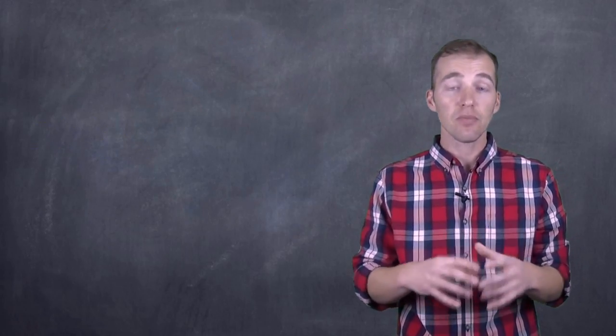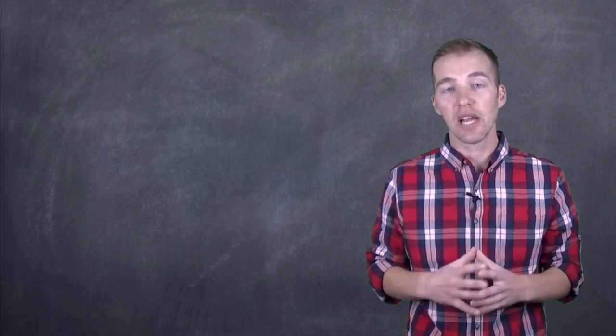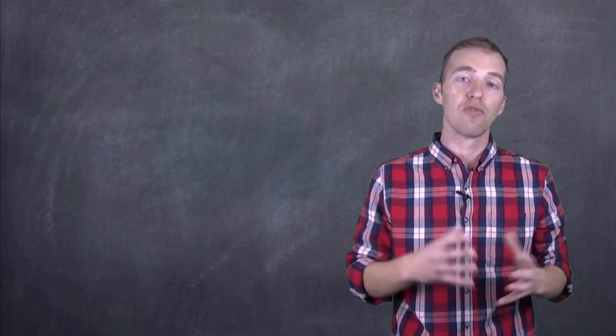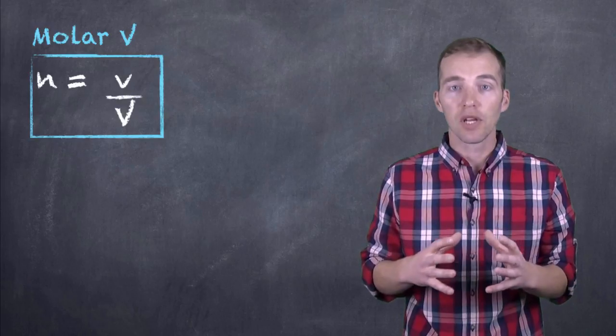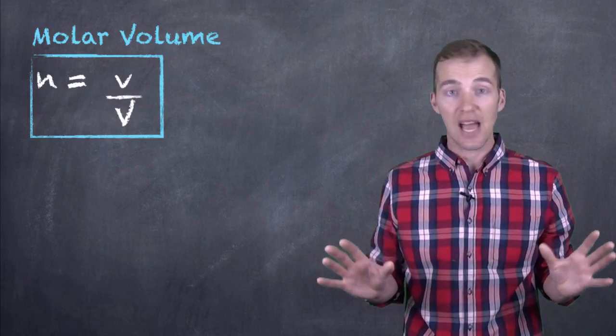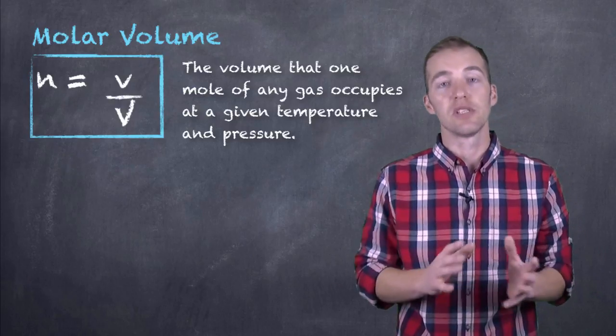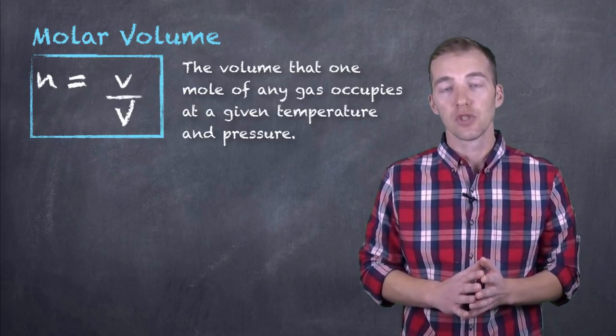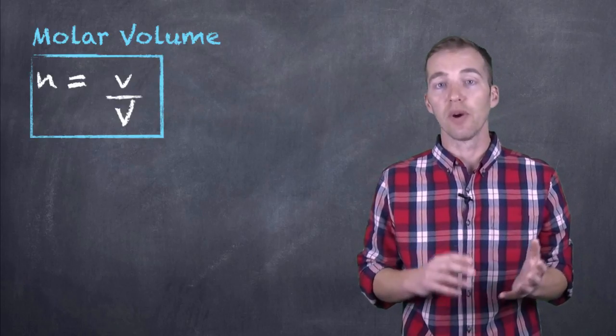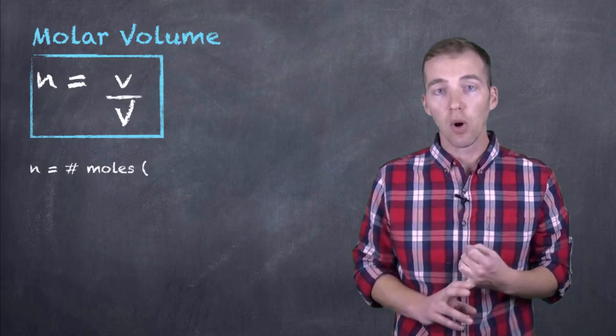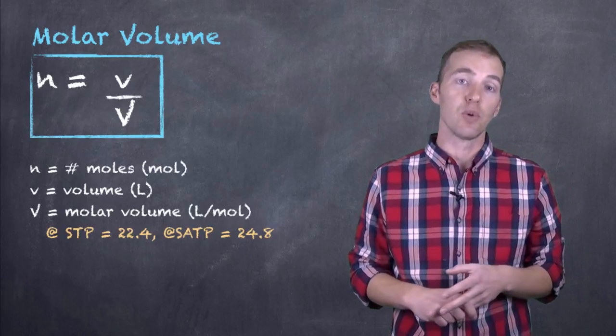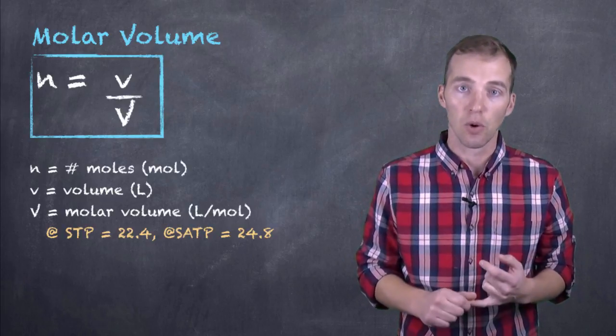Now because of this, there is another variation of the ideal gas law that we can use that involves something called molar volume. Now molar volume is the amount of space or volume that any gas occupies at a specific temperature and pressure. So for standard temperature and pressure, we have a molar volume of 22.4 liters per mole and for standard ambient temperature and pressure, we have a value of 24.8 liters per mole.